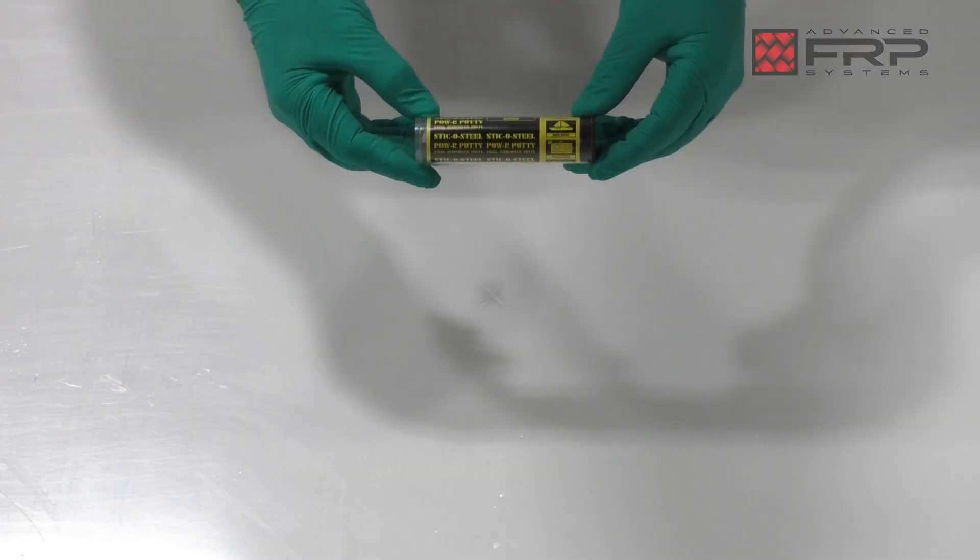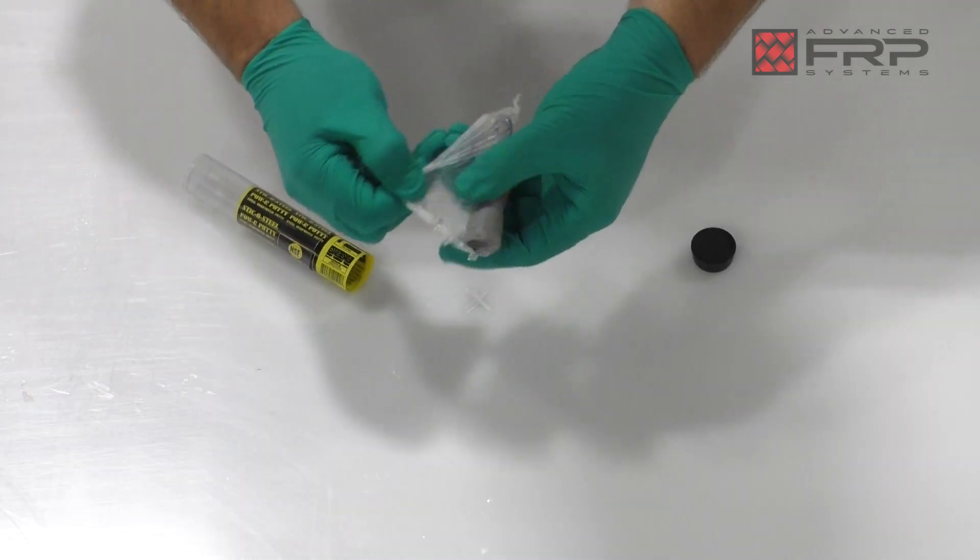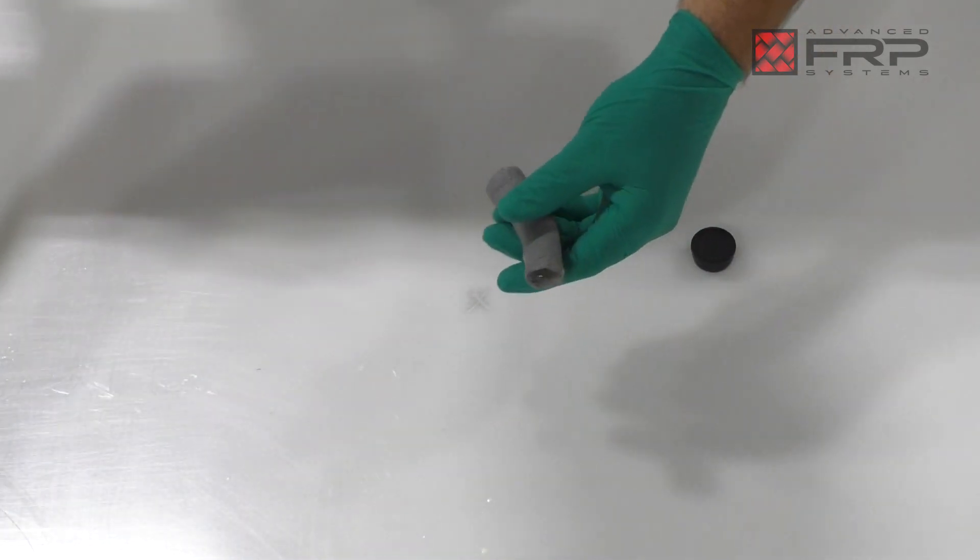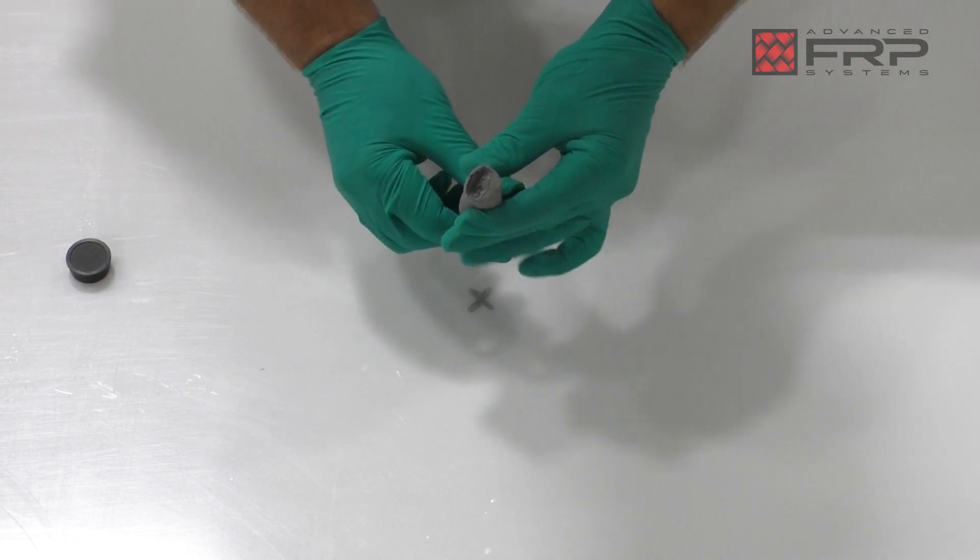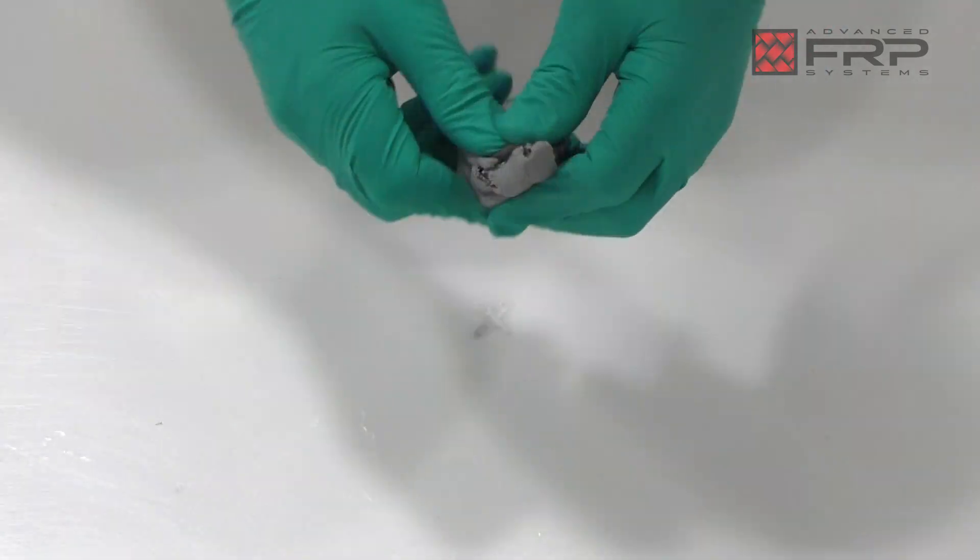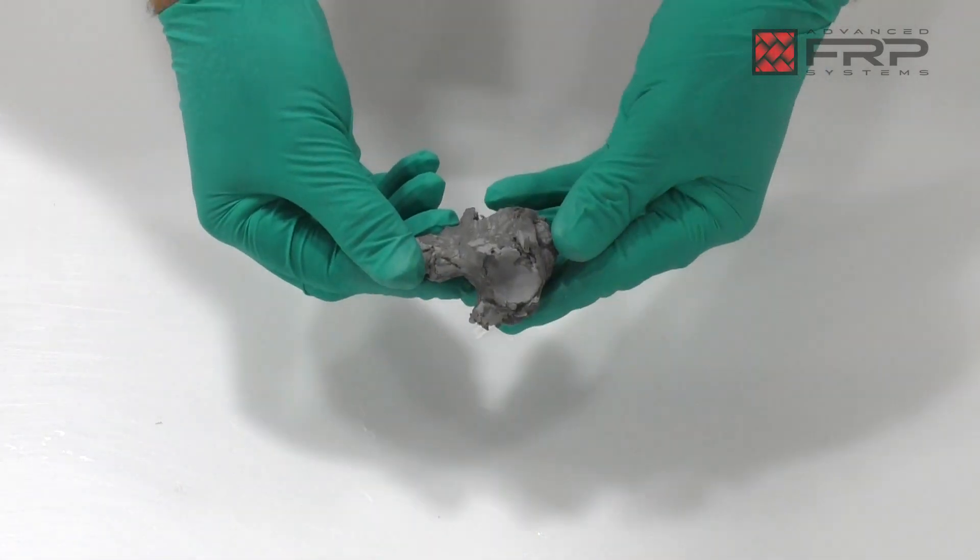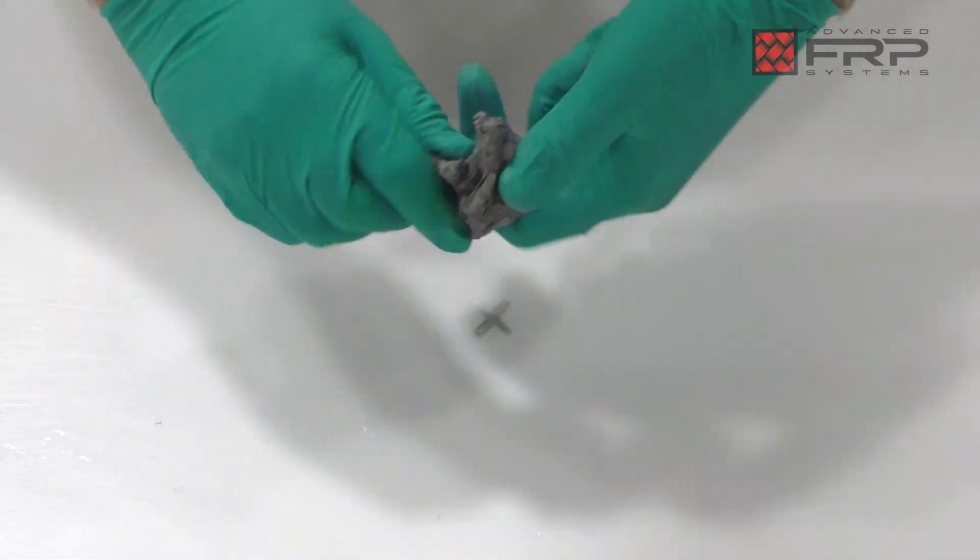Open the steel stick putty container, removing all plastic wrapping. Hand mix the steel stick putty, making sure to knead and incorporate all parts of the putty until it is one uniform color. This should take about a minute and a half.